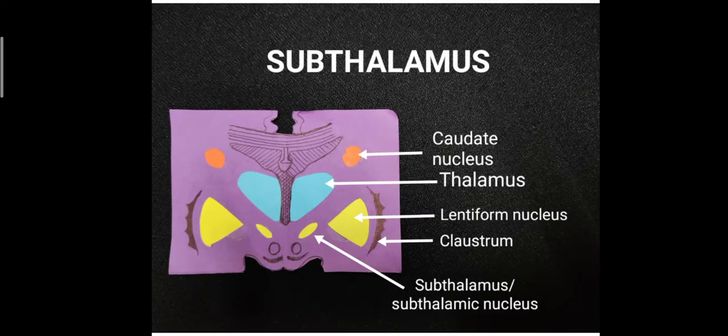Hi everyone, this is Dr. Manu Krishnanki. In the previous class we discussed about the parts of the pars dorsalis, which included the metathalamus and the epithalamus. After finishing that, we are moving on to the pars ventralis, where we will be discussing two structures today: the subthalamus and the hypothalamus.